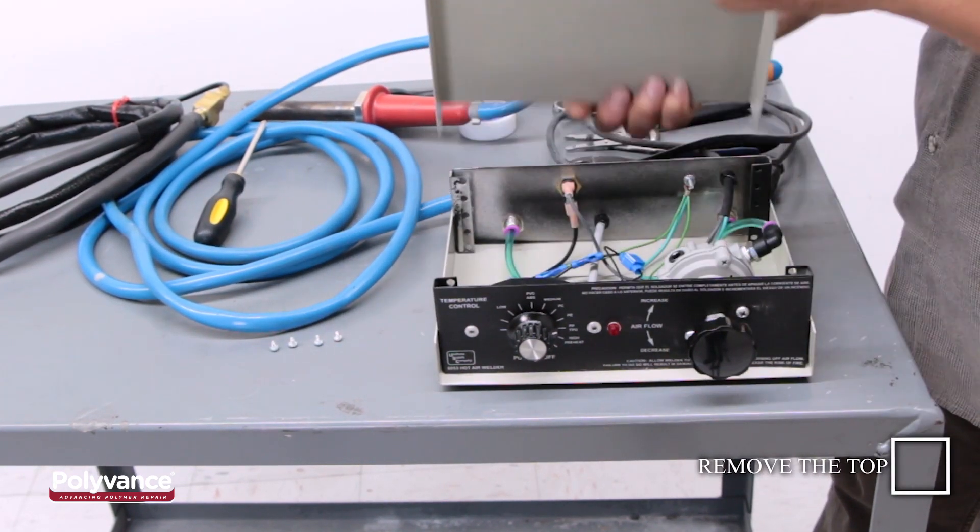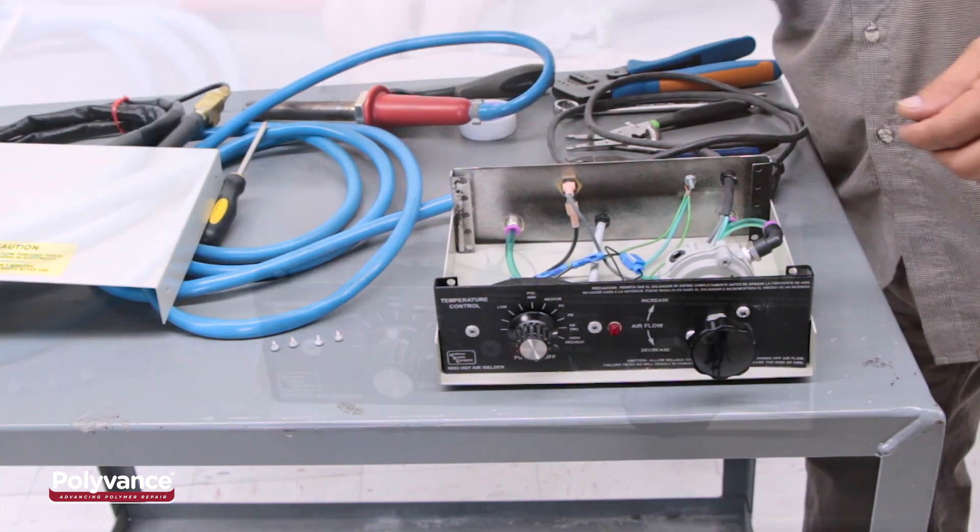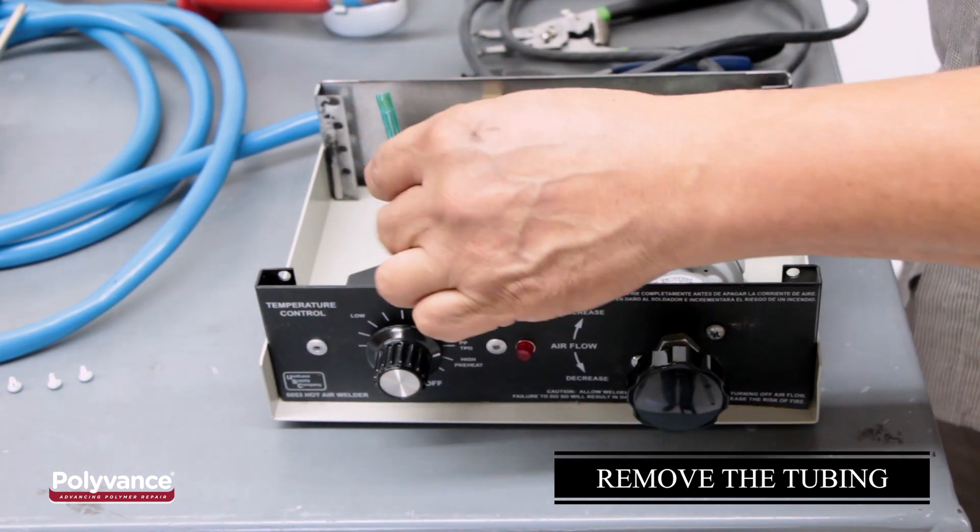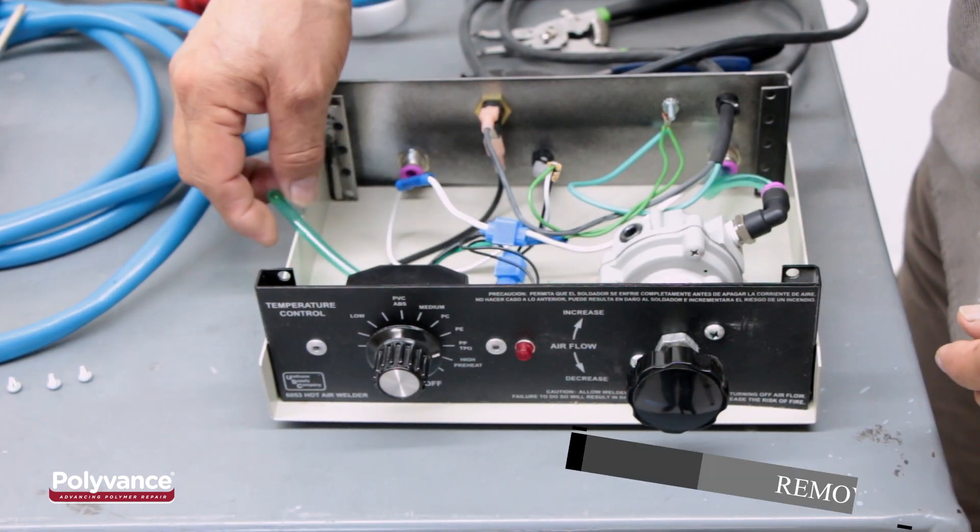you must first unscrew and remove the top panel of the welder. Then, remove the tubing from the fitting by pressing down on the fitting's collar while pulling on the tube.